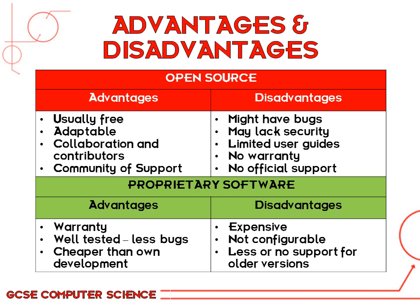With proprietary software, the advantages are often the opposite of open source disadvantages. Where open source has no warranty, proprietary software always comes with a warranty, so if there's any fault they have to help you repair it. They are often well tested, meaning you'll find fewer bugs and fewer problems. Also, even though you pay for the software, it's cheaper than trying to develop or customise your whole system yourself.